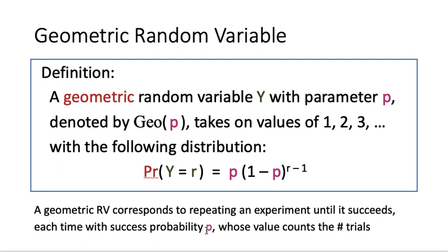We can see that the chance of Y equaling 1 is p, since we have probability p of getting a success immediately. On the other hand, if Y equals 2, it means the total number of experiments conducted is 2, so we must fail the first time and then succeed the second time. The chance of failing first is 1 minus p, and then succeeding is p, so P(Y=2) = (1-p)·p. In general, to get Y equal to r, we fail for the first r minus 1 times and then succeed on the r-th trial, giving probability (1-p)^(r-1) · p.